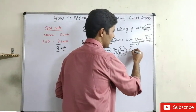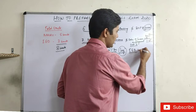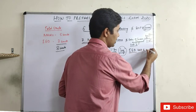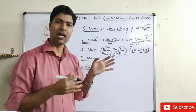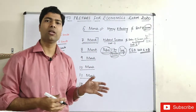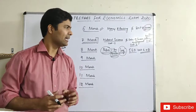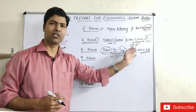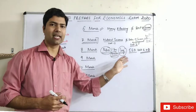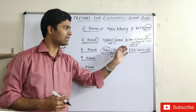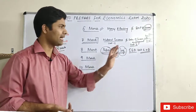Then IED starts. IED unit number 6 and unit number 8, plus the last unit on comparison between India, China, and Pakistan — that's a total of 4 chapters in the IED section that you need to cover.